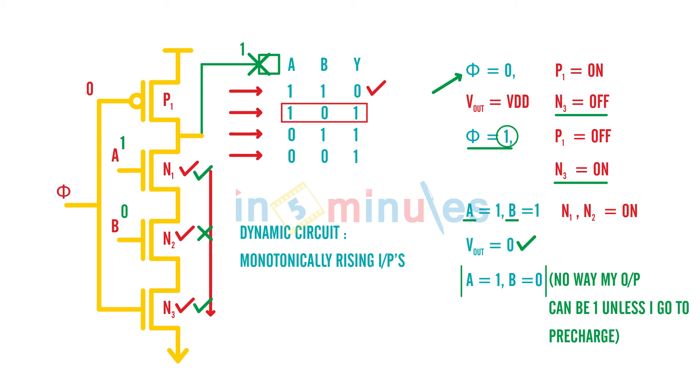That means dynamic circuits have a drawback which is they need monotonically rising inputs. It means that the order in which the input should go is from low to high. And it can be low to low, high to high, but it cannot be surely high to low. Let's understand not to get confused here.